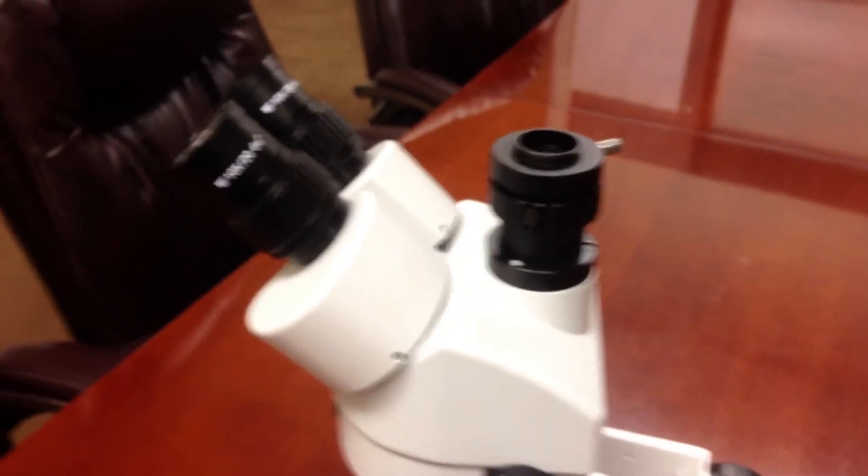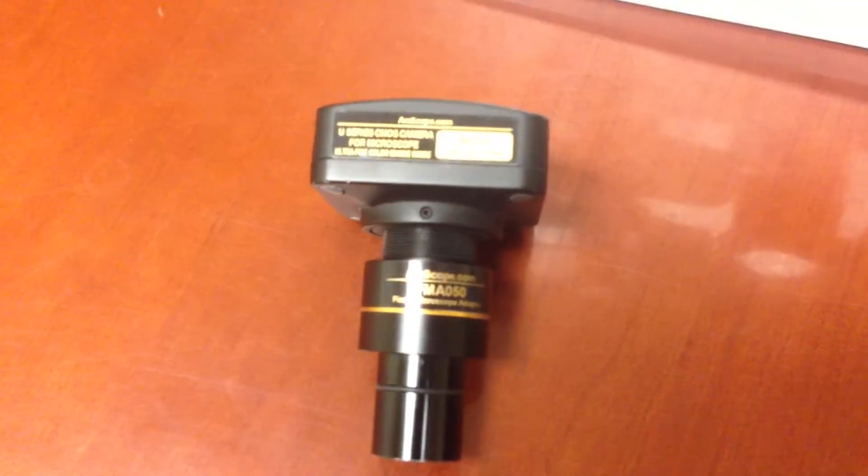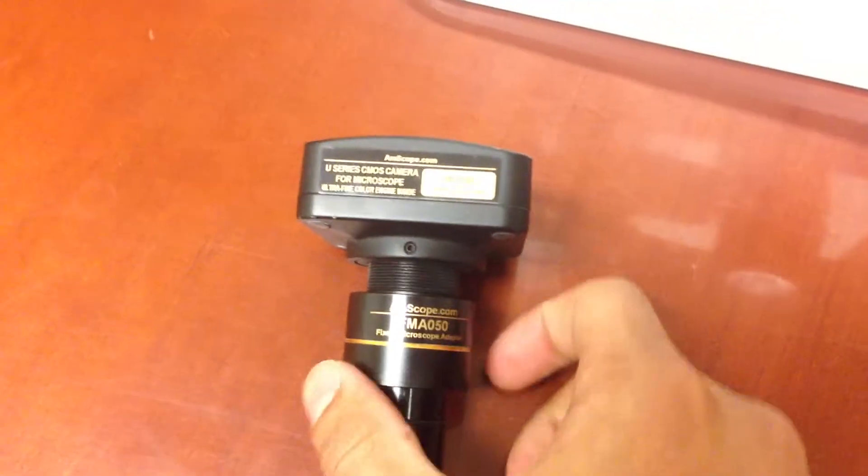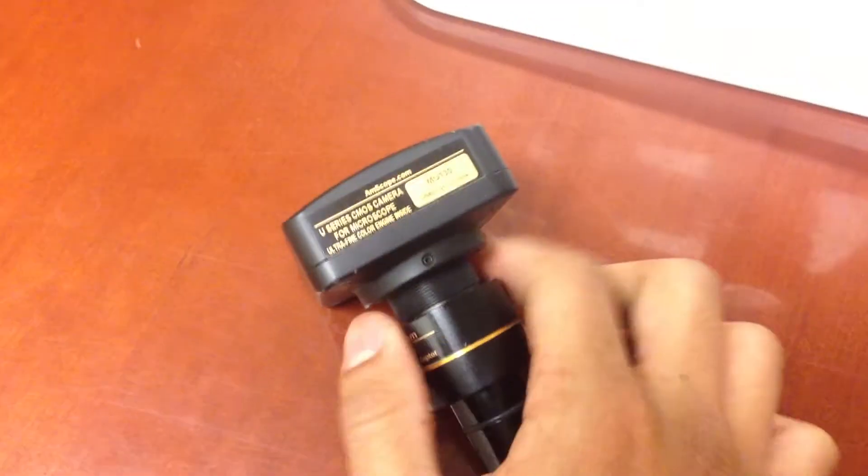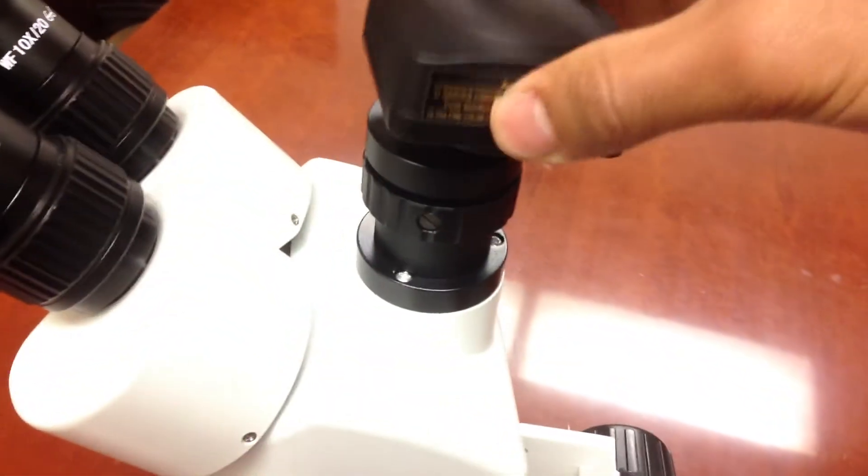So that's part A. Part B is unscrewing the reduction lens from the camera. And for video purposes, again, I already unscrewed it. So just easily remove. There's the new part. Then you get the head of the camera.